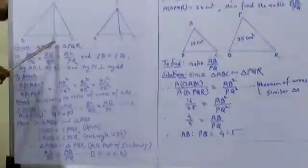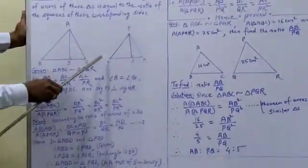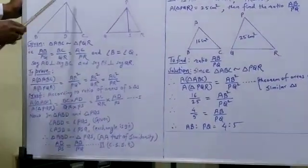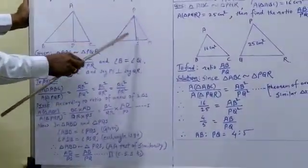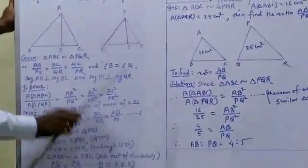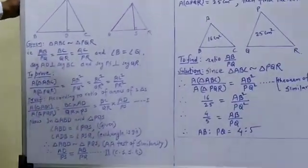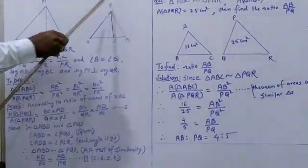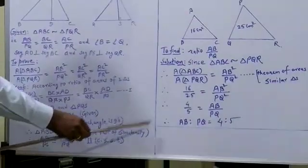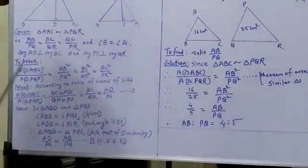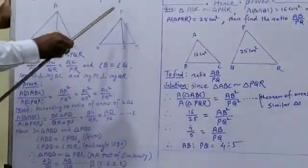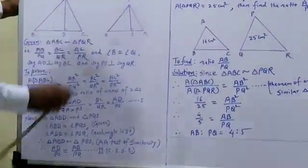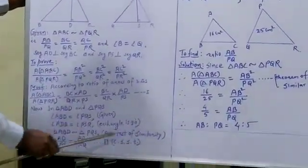In triangle ABD and triangle PQS: angle ABD equals angle PQS — reason: given. Angle ADB equals angle PSQ — reason: each angle is 90 degrees. Therefore, triangle ABD is similar to triangle PQS by AA test of similarity. Therefore, AD upon PS equals AB upon PQ — reason: CSST. This is equation two.